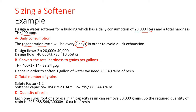Therefore, the design flow rate will be doubled — times two — and we will design for 40,000 liters. We will then convert it to gallons, and we will get 10,568 gallons.